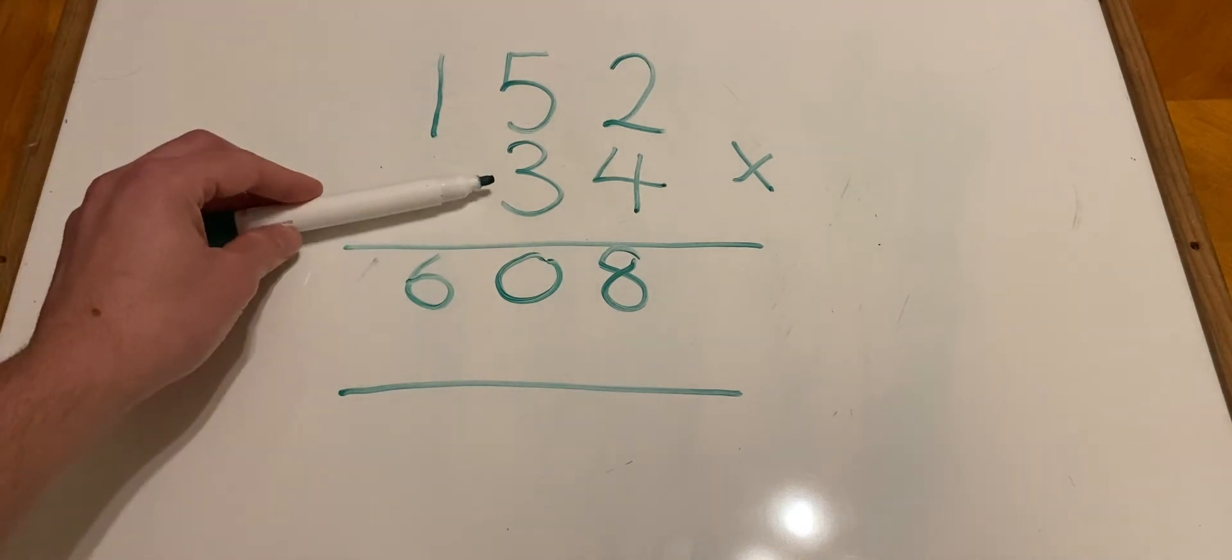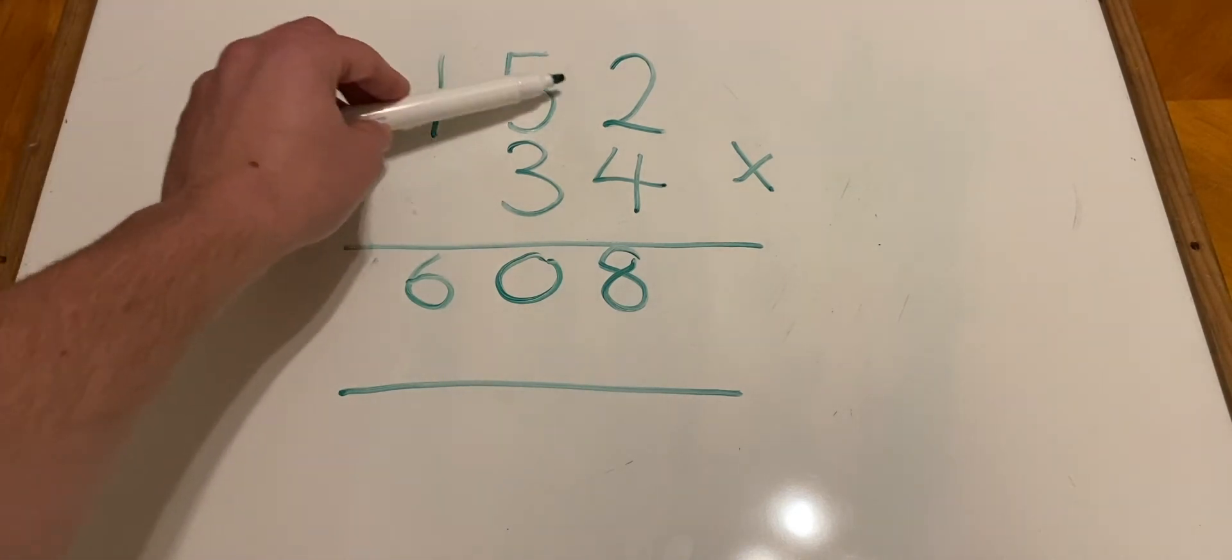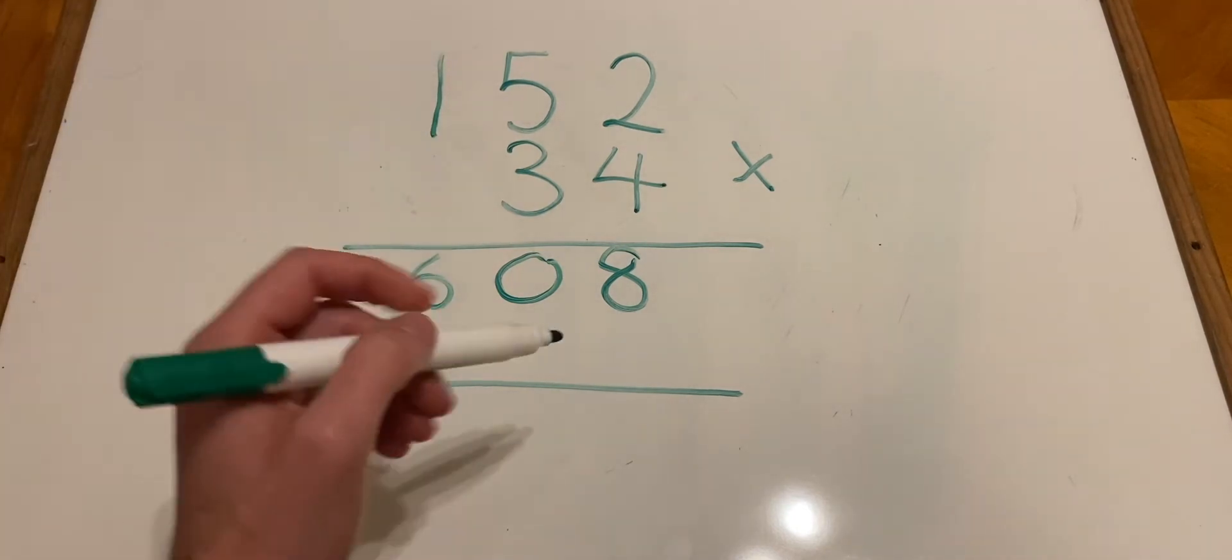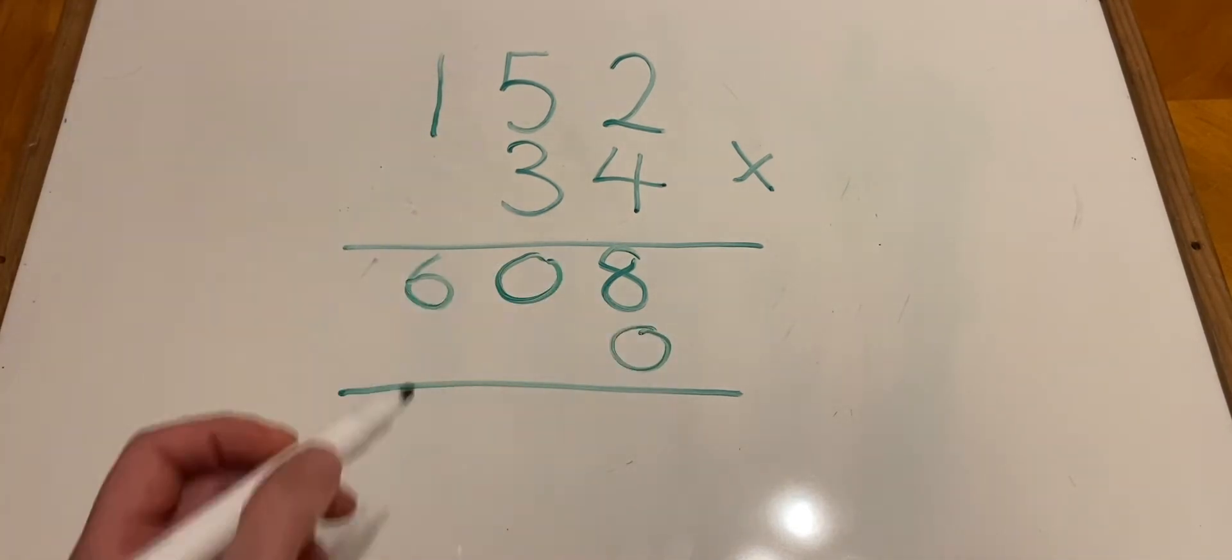Now it's time to do 30 times 152. We know it's 30 because it's in the tens section here. So we start by placing a 0 here because we're multiplying by 30 and not by 3.